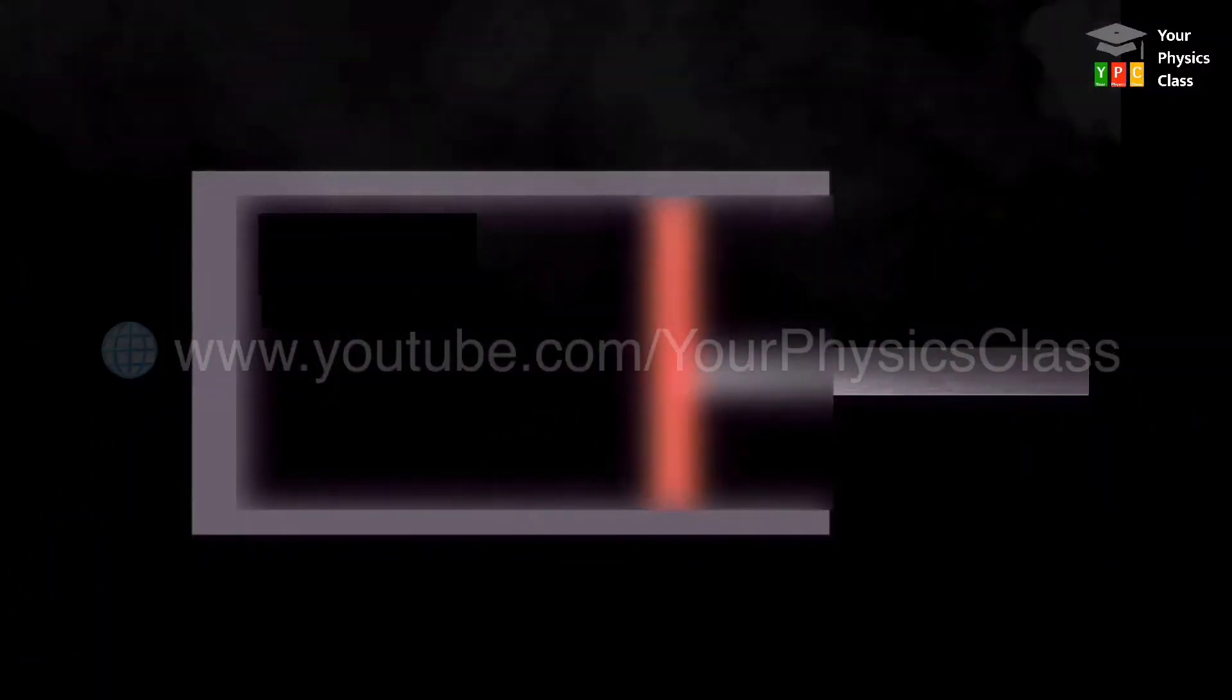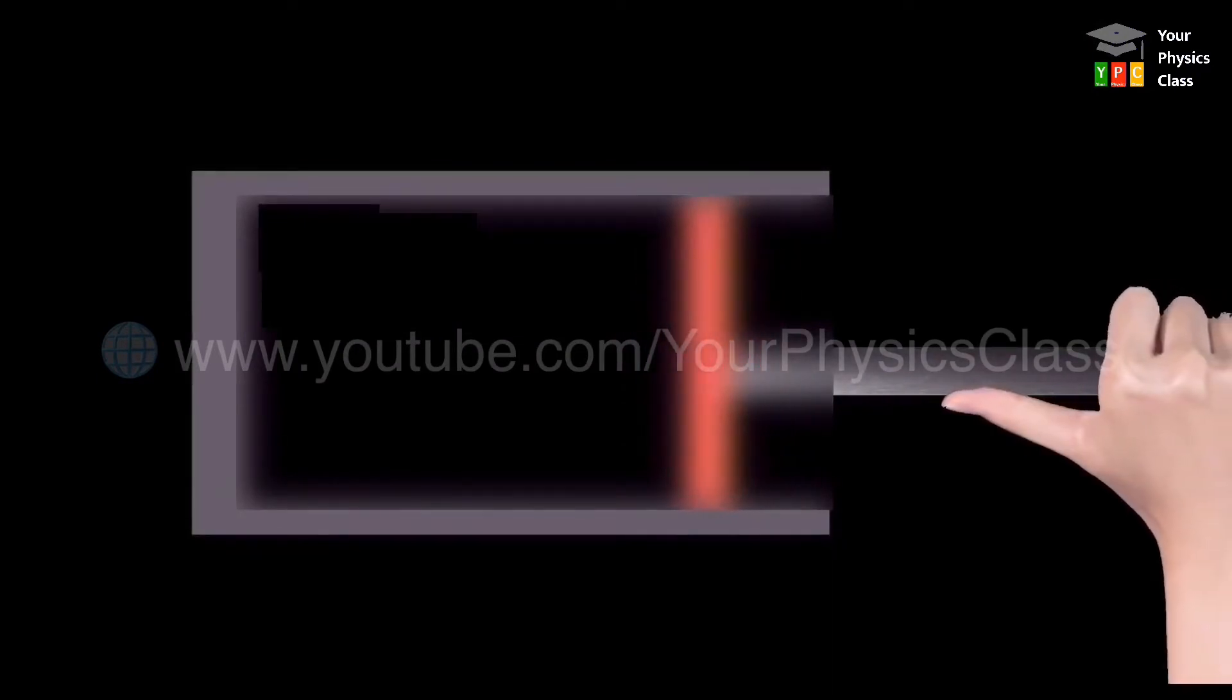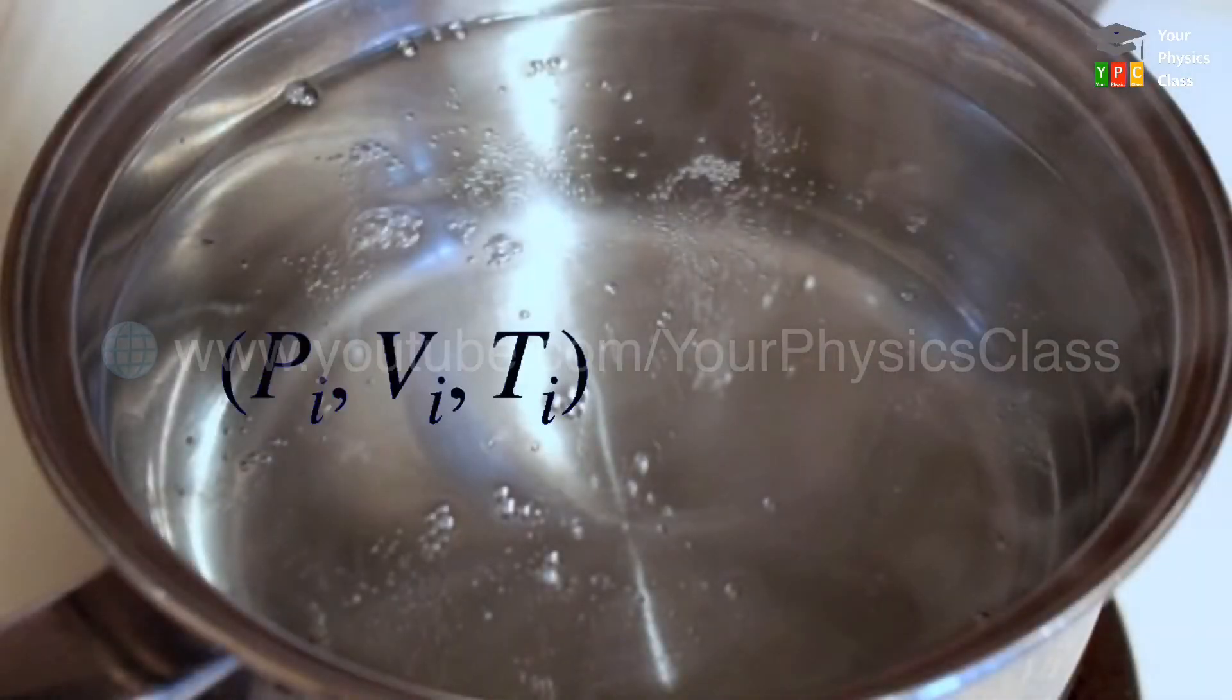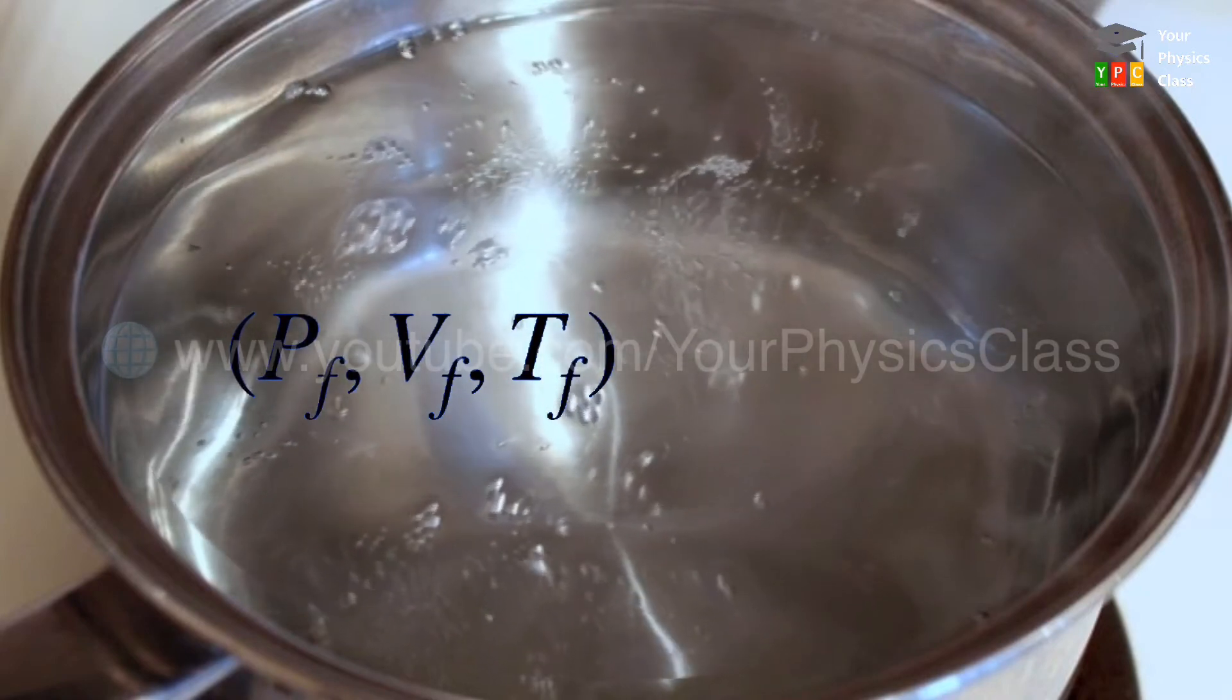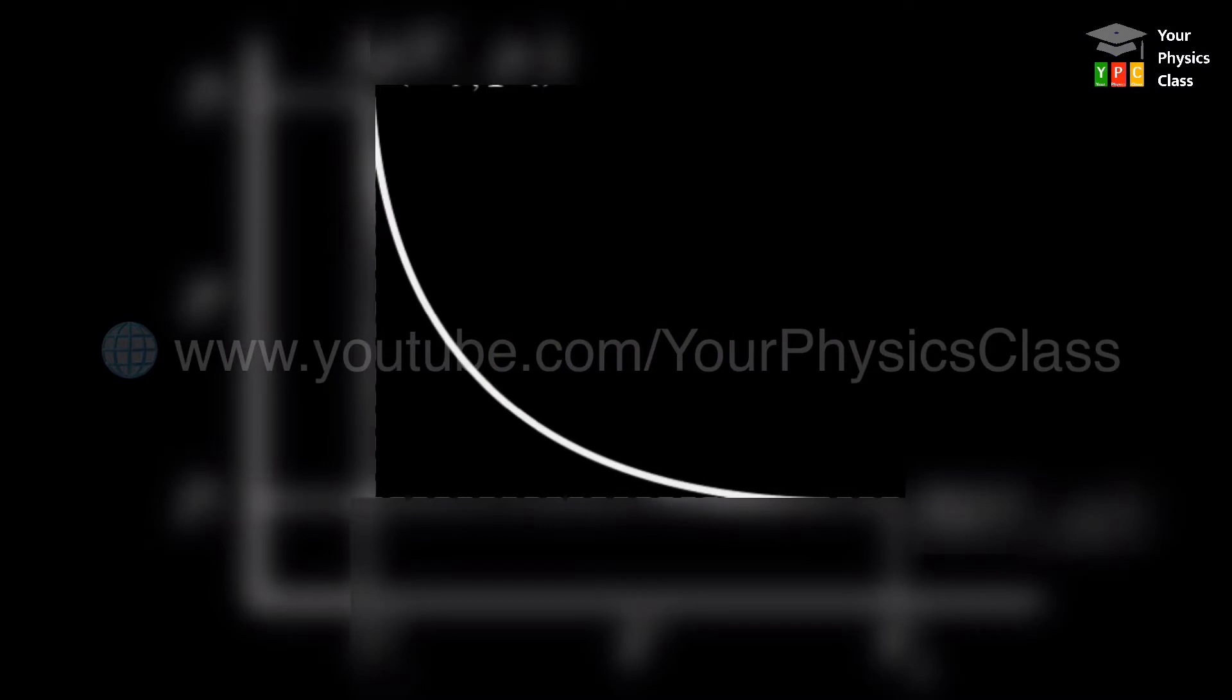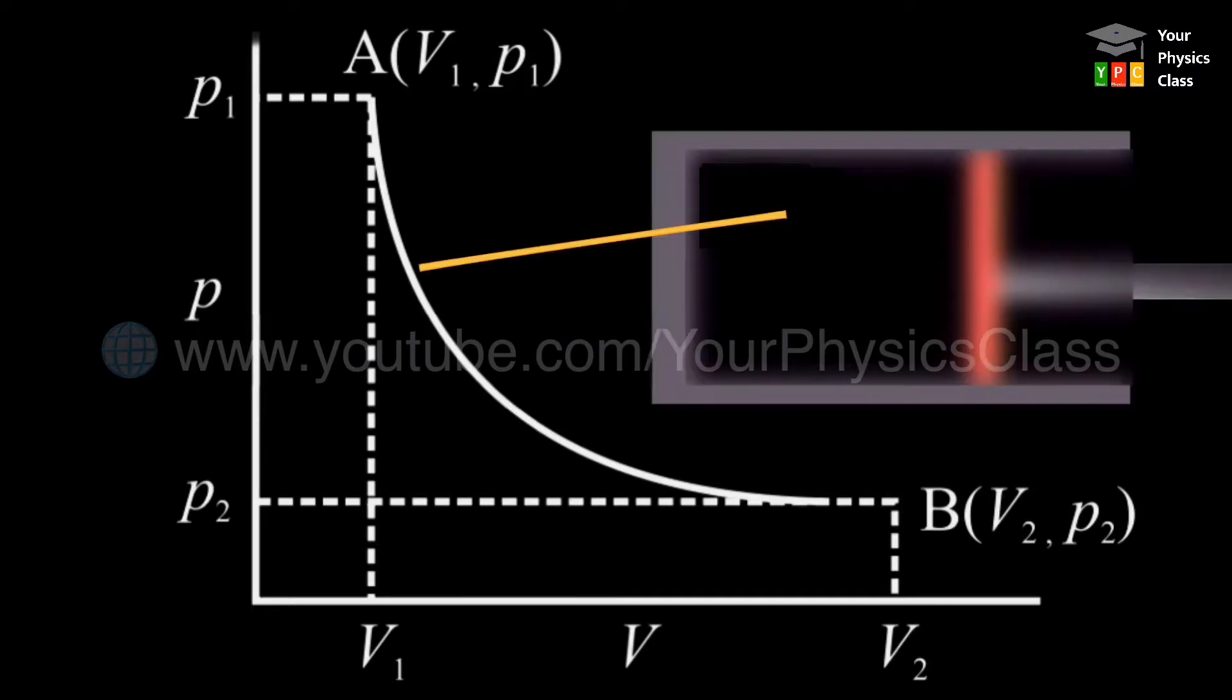Similarly, some work can be done by the system, that is positive work, or some work can be done on the system, that is negative work. When a thermodynamic system changes from its initial state to final state, it passes through a series of intermediate states. This series of intermediate states when plotted on PV diagram is called the path. The PV curve or PV diagram shown on screen is such a path. It tells us the way a system has gone through a change.